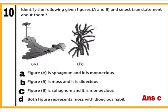Question 10: Identify figures A and B and select the true statement about them. Figure A is of liverwort Marchantia and B is of moss Sphagnum. Option A says figure A is Sphagnum and monoecious — wrong. Option B says figure B is moss and dioecious — wrong, Sphagnum is monoecious. Option C states figure B is Sphagnum and it is monoecious — correct, as both antheridia and archegonia develop on the same plant but different branches. Option D is also wrong. Correct answer is C.